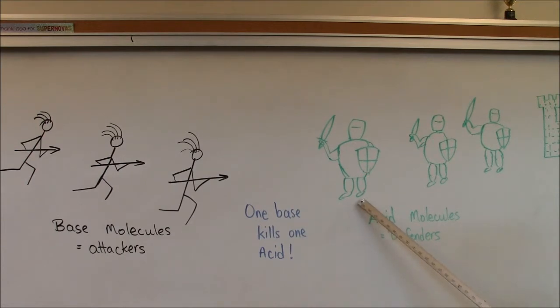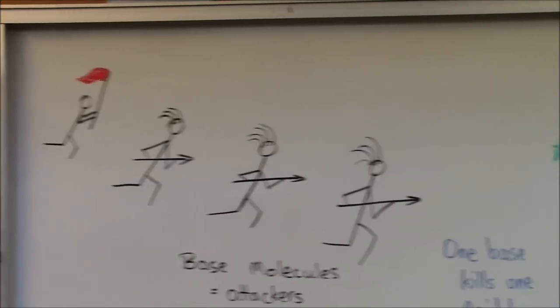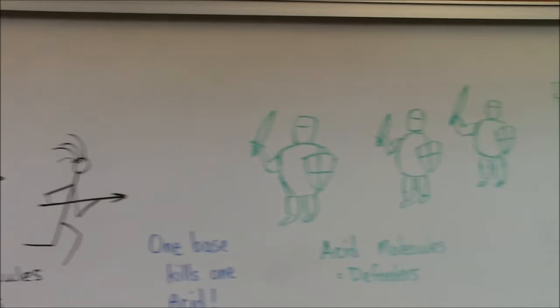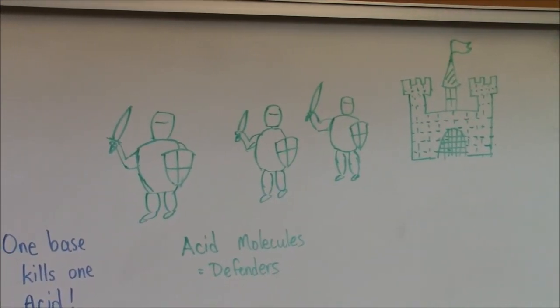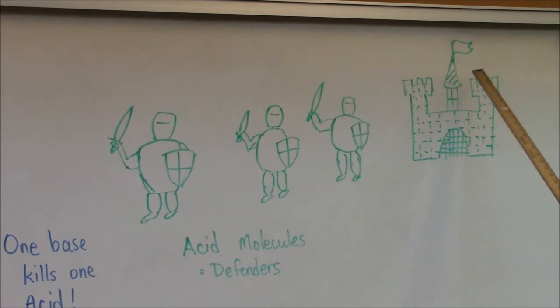So if there are one, two, three defenders, acid molecules of the defenders, it will require one, two, three molecules of base to wipe out those defenders. When the castle is defenseless, when the last acid soldier has fallen, this flag will be changed to pink to represent the victory of the bases.